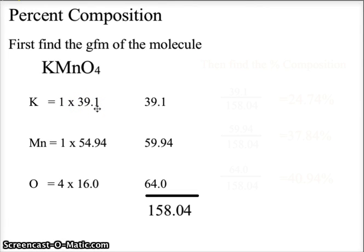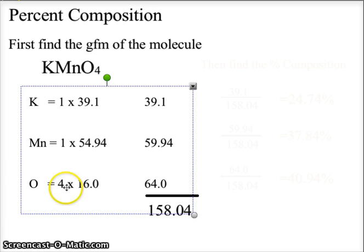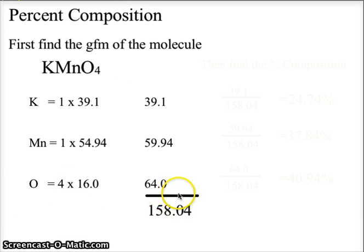So we're looking at 1 times 39.1. The 39.1 comes from the periodic table, and the manganese is 1 times 54.94. For our oxygen, we're going to round off the 15.99 and make it 16, so we're going to go with 4 times 16, which gives us 64. We add those together, and we get a gram formula mass of 158.04 grams per mole.